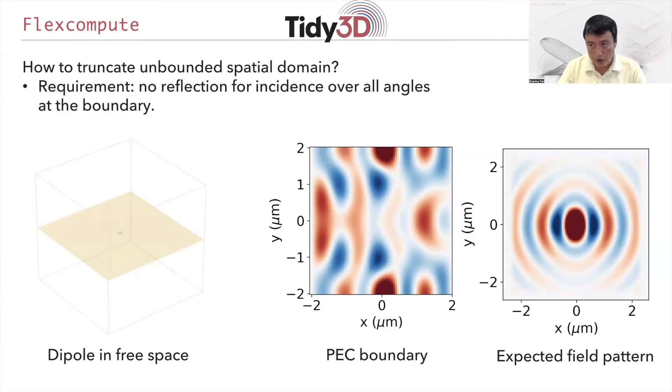As an illustration of why this is important, suppose you are interested in computing the radiation pattern of a dipole in free space. If you surround the computational domain entirely with a perfectly electric conductor boundary condition, which is actually a perfect mirror, then you don't have your usual dipole radiation pattern at all. But if you do the boundary condition right, which is the perfectly matched layer boundary condition, then you get back the expected field distribution of a dipole radiation pattern. So the use of the boundary condition to truncate the spatial domain is extremely important.